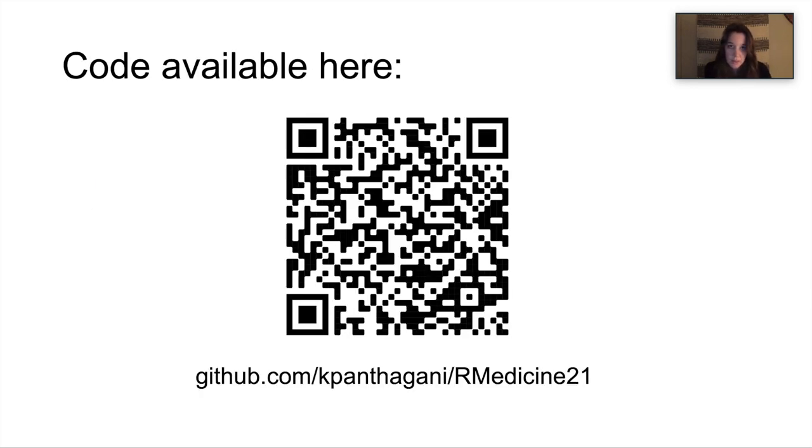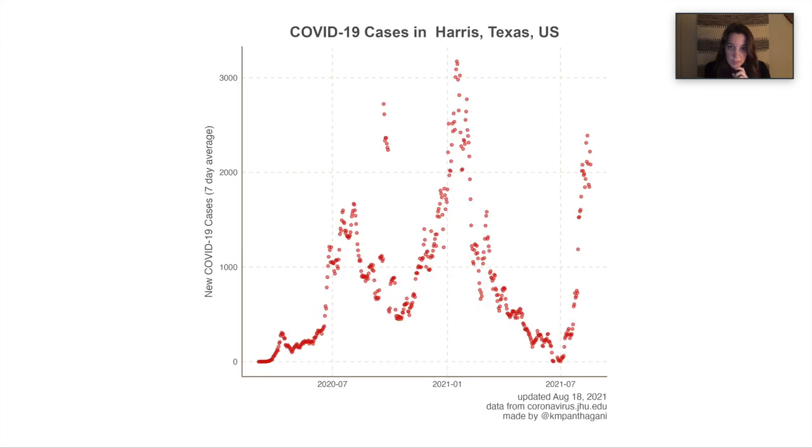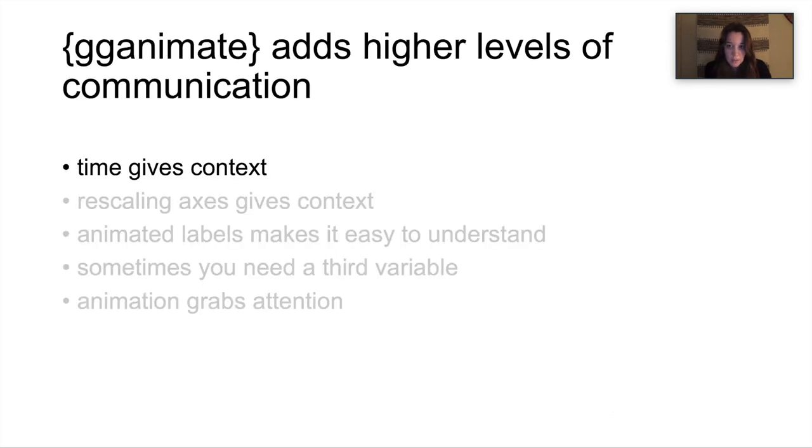All right, so I'm going to take you through one of the scripts that I wrote that plots COVID cases and deaths over time. You can grab the scripts on GitHub. This QR code will take you straight there. All right, so this is the plot. It's just in this case, COVID cases over time in Harris County, Texas, which is Houston, Texas. The script lets you change the county so you can plot any county in the US. And so this is the static version of the plot, and I'm going to take you through how we would animate it.